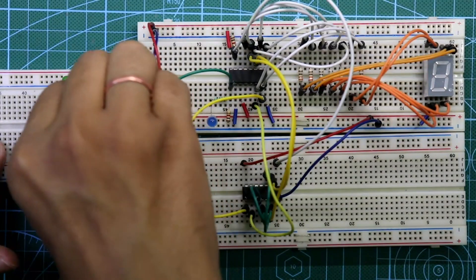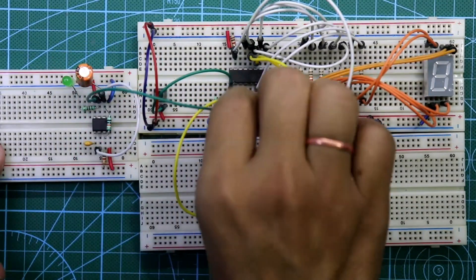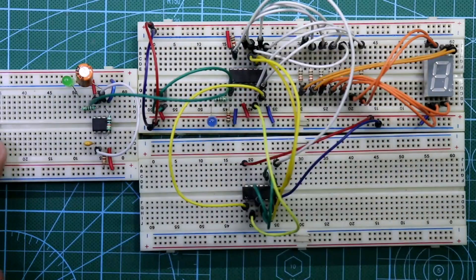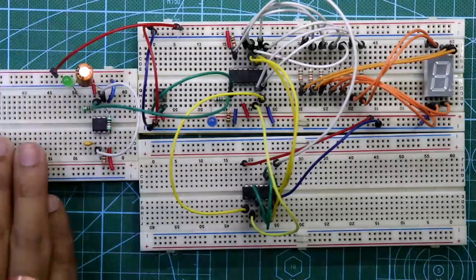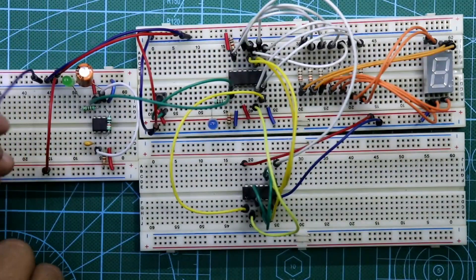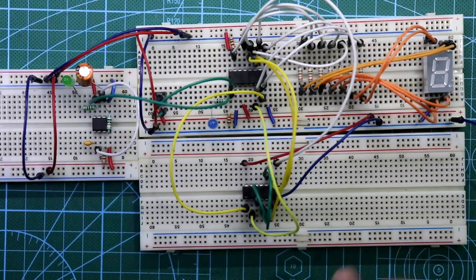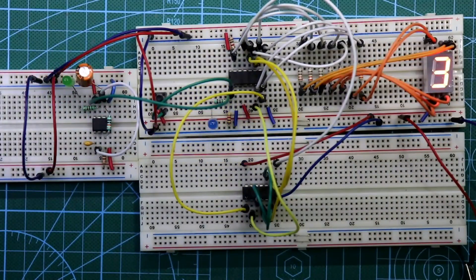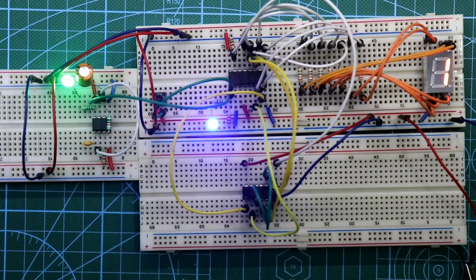Connect plus VCC to this and the ground. Now put the power supply. Okay, so our circuit is working. So guys, this is how you can make a mod 8 counter using 4026.